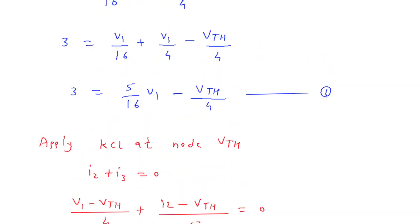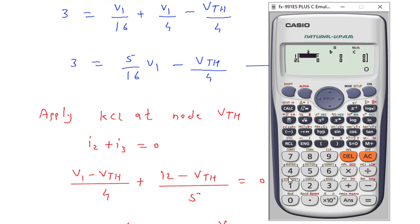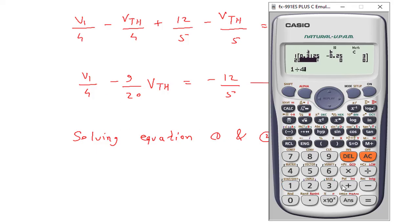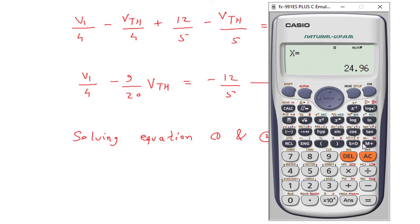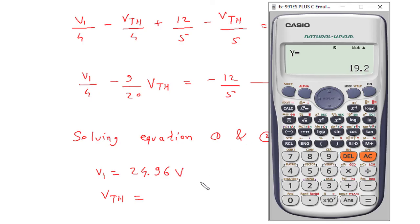Now we have equation 1 and equation 2. Solving equation 1 and 2 using the matrix with coefficients 5/16 and −1/4 for equation 1, and 1/4 and −9/20 for equation 2, with right-hand sides 3 and −12/5, we get V1 equal to 24.96 V.